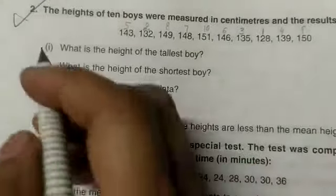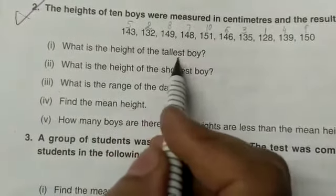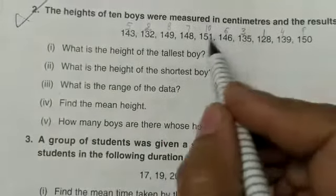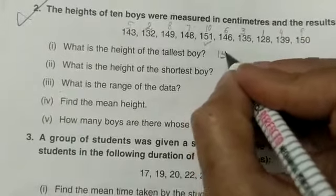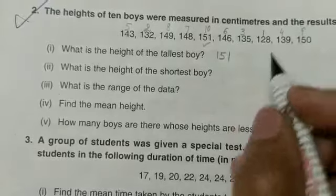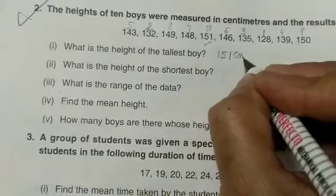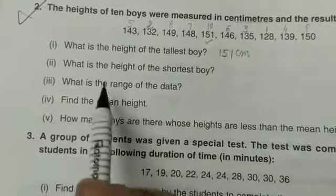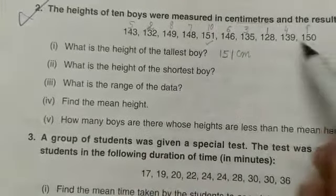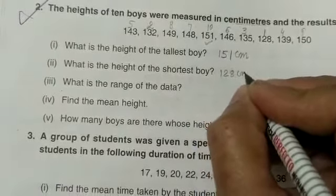After that, the question asks: what is the height of the tallest boy? The tallest boy's height is 151. Total number is 10, so the 10th number, 151 cm, is the height of the tallest boy. Second, what is the height of the shortest boy? The shortest boy is number 1, which is 128 cm.